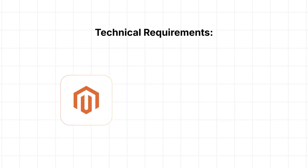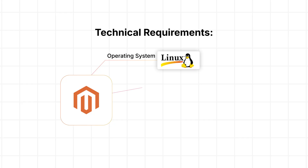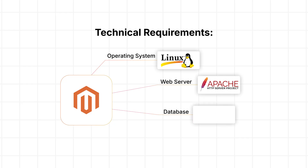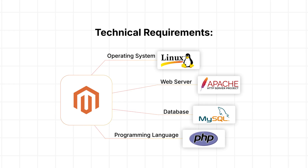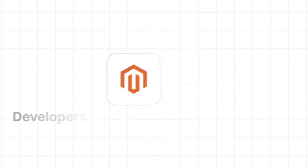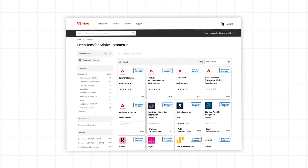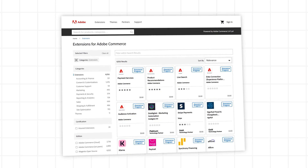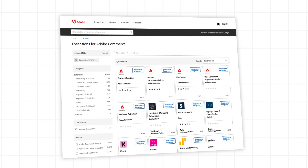To set up Magento Open Source, users need a suitable hosting environment that typically includes an Operating System (Linux), Web Server (Apache), Database (MySQL), and Programming Language (PHP). Developers can enhance the platform by adding extensions or themes from the Adobe Marketplace.